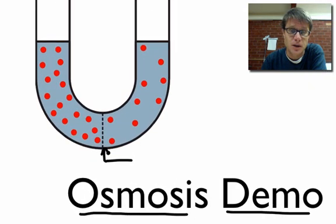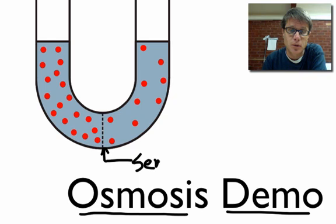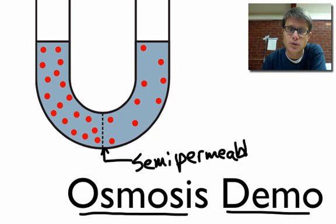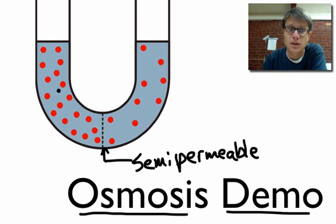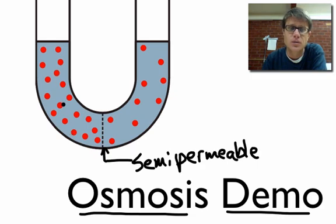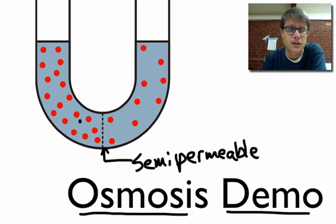Well, if you look right here, this would be a semi-permeable membrane. What that means is it only allows a few things to move through. You can see that the water molecules are small enough that they can pass through, but the solute molecules aren't. Solute molecules could be sugar, could be ions, but essentially they can't make it through — they're too big.